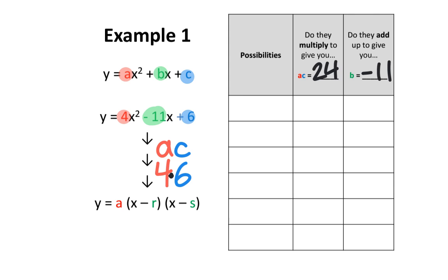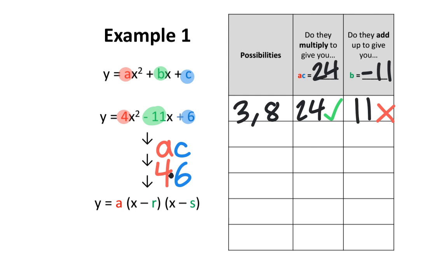Using guess and check is a good strategy here. Let's start with the numbers 3 and 8. 3 multiplied by 8 gives us 24, so that definitely works. However, 3 plus 8 gives us positive 11, so that doesn't work.